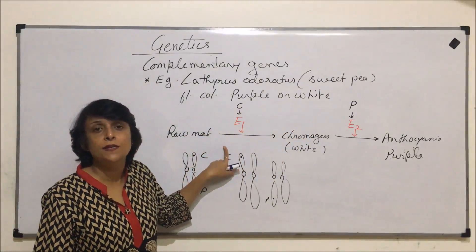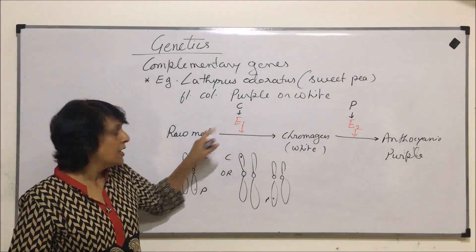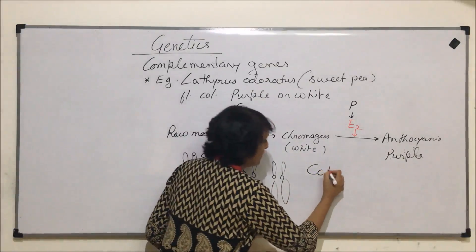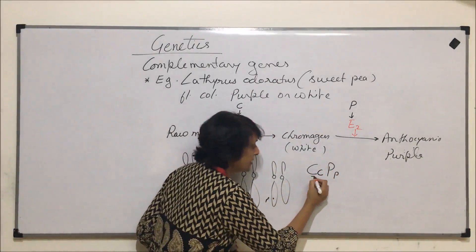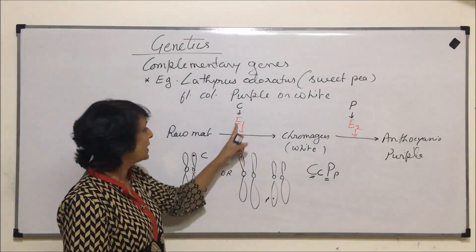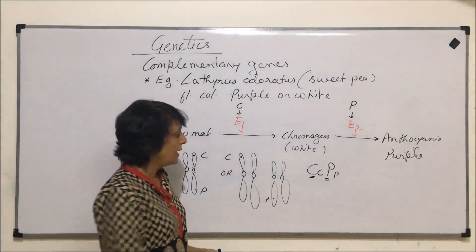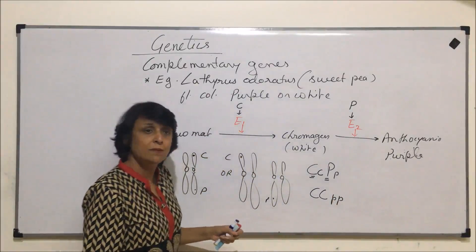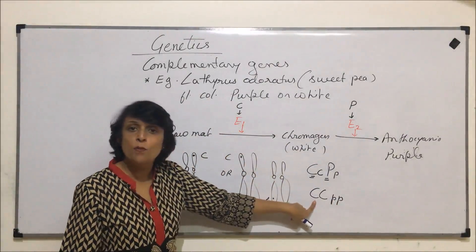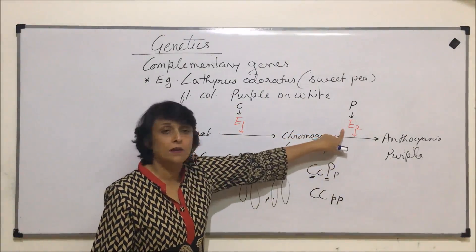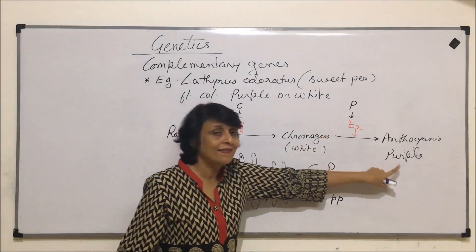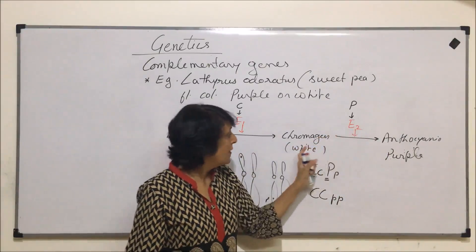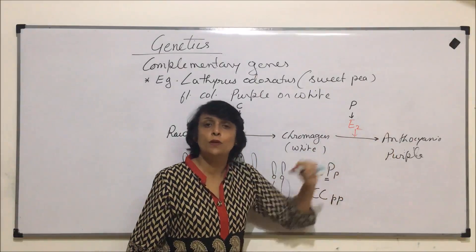If we have dominant C and dominant P, both enzymes will be synthesized and the color will be purple. However, if both C's are dominant but the P's are recessive, enzyme one will be synthesized but enzyme two will not. In that situation, the flower color will be white, because without enzyme two the chromogen cannot be converted into purple-colored anthocyanin.